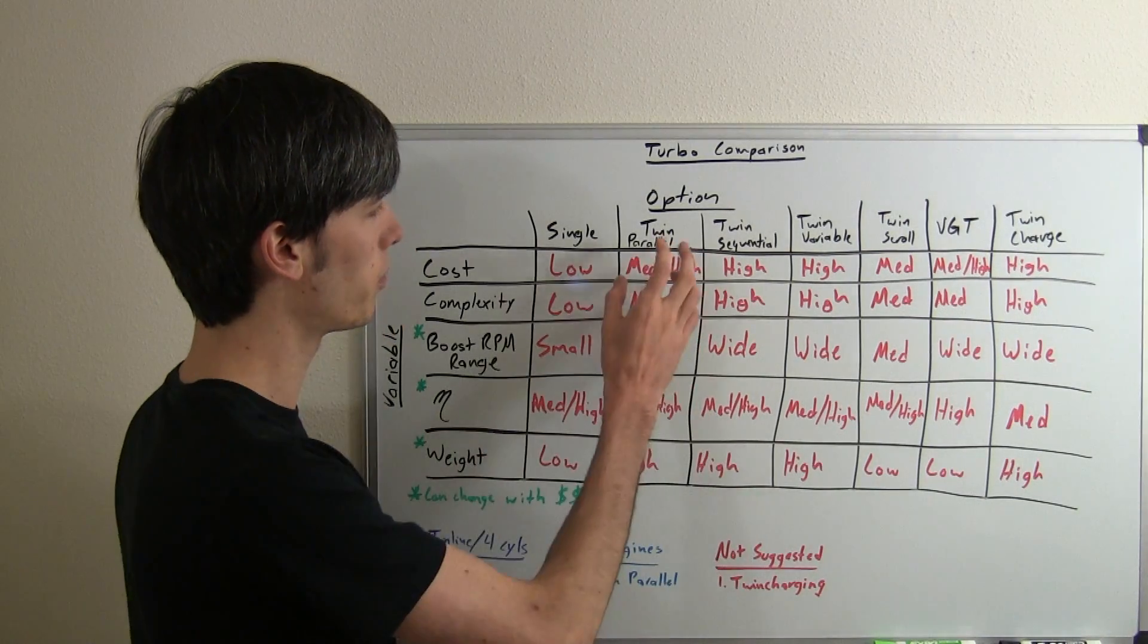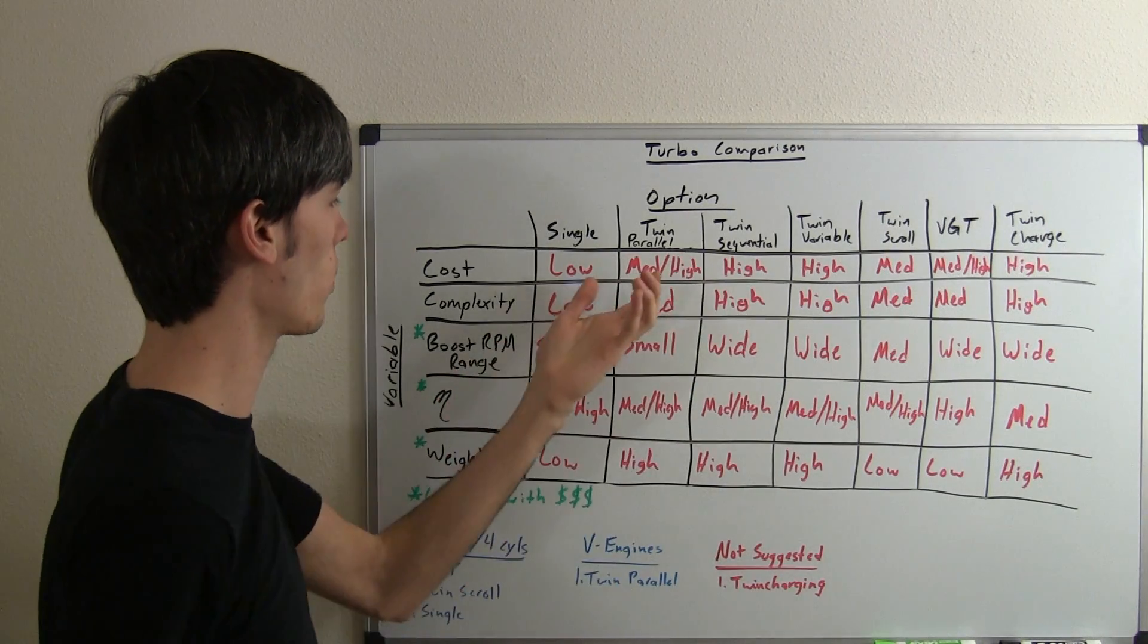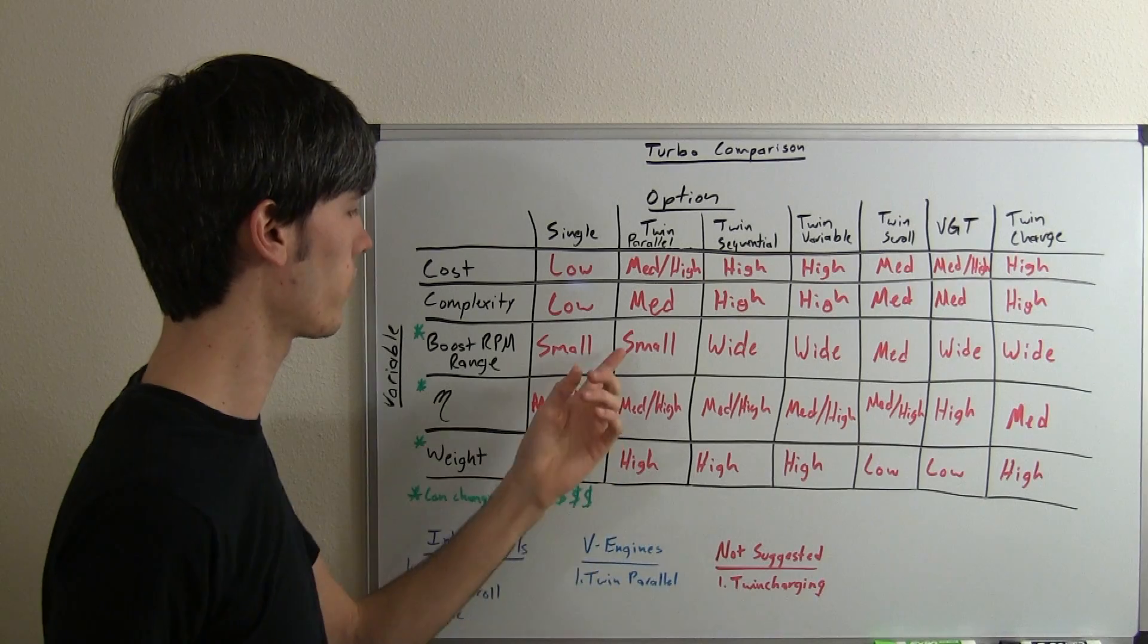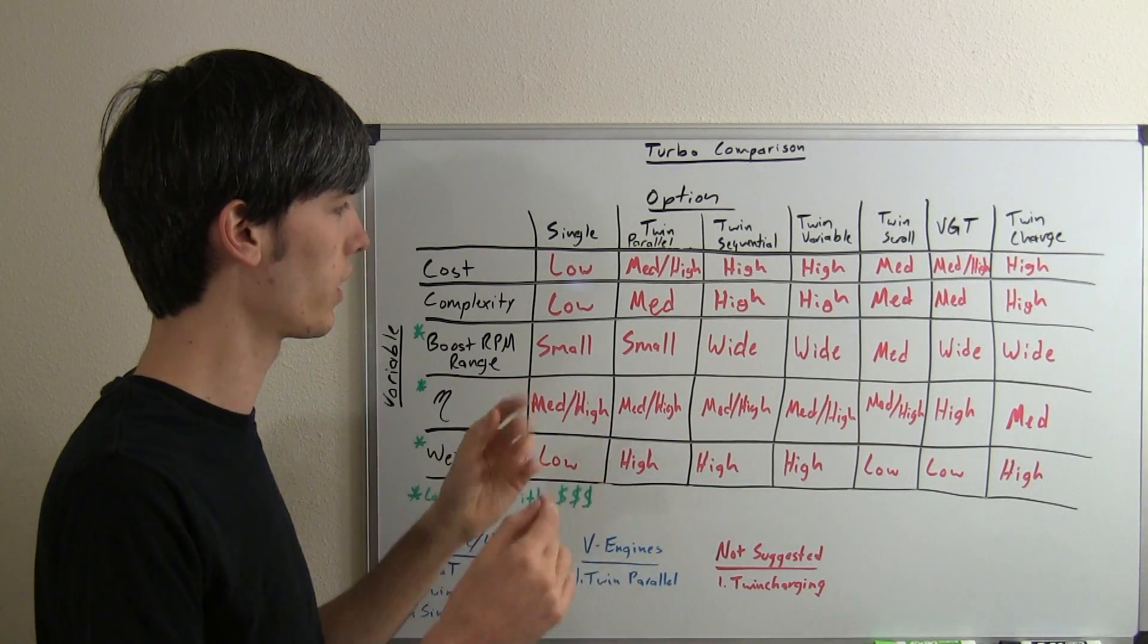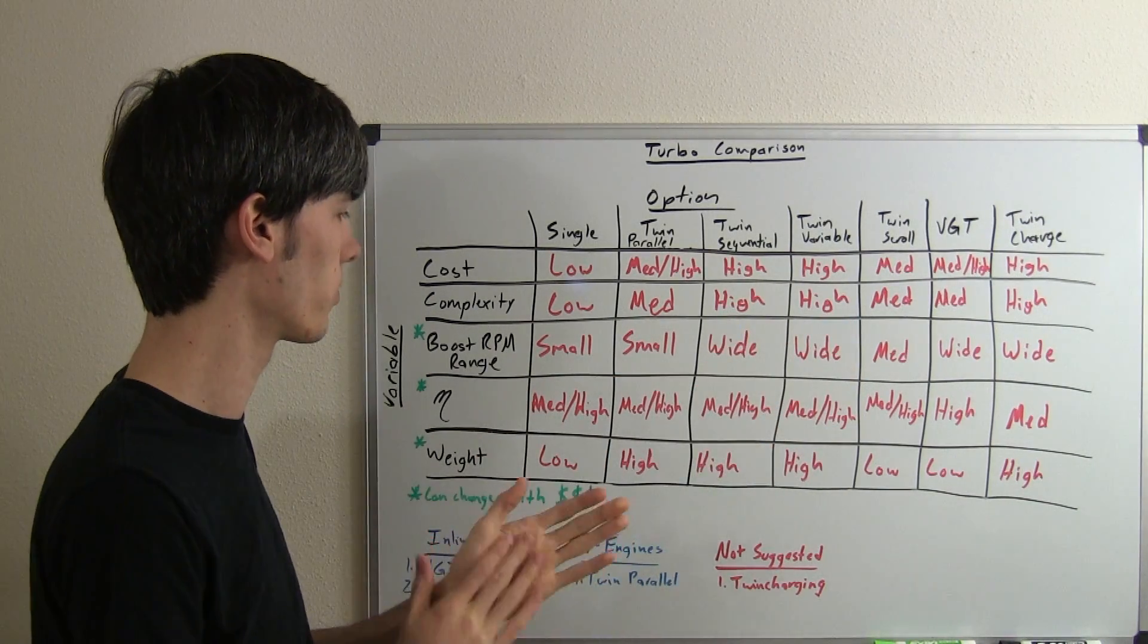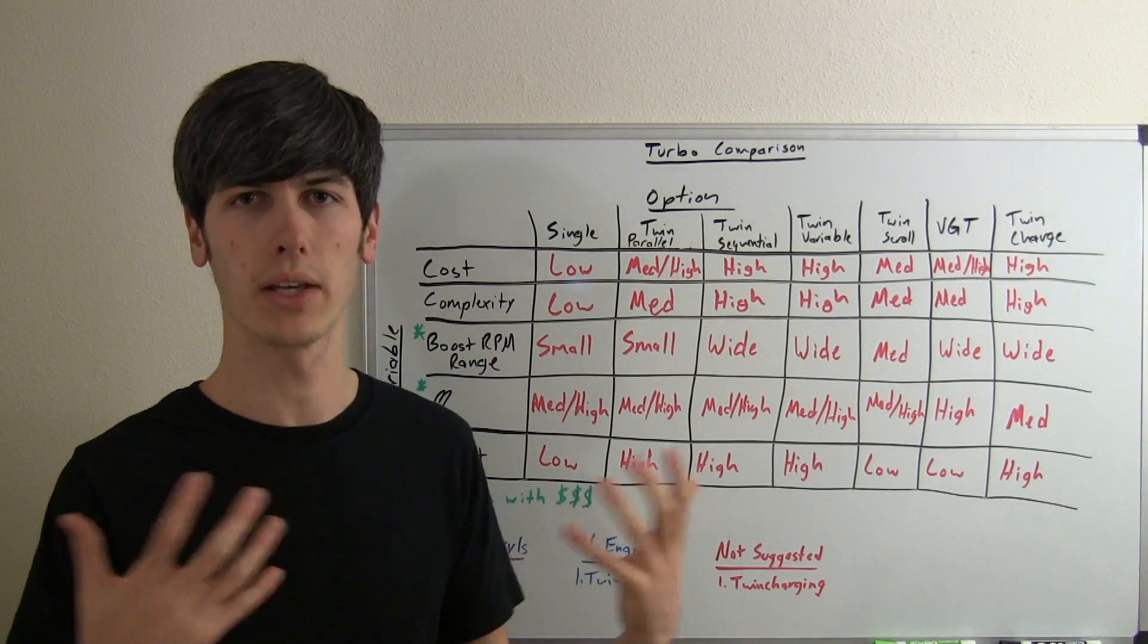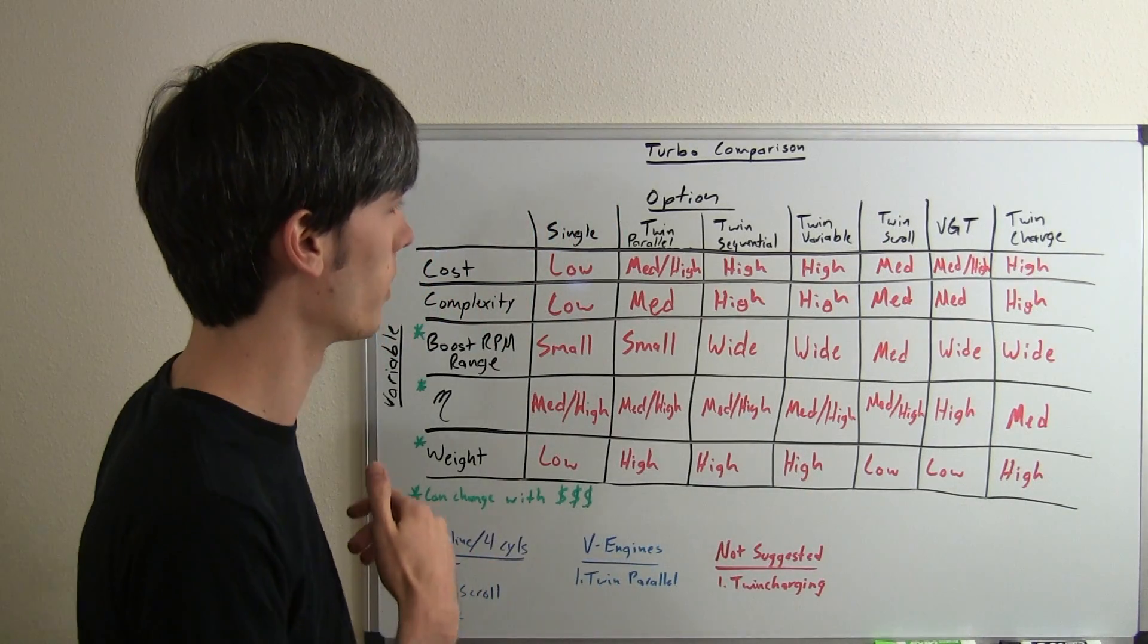So twin parallel, this is basically just like two singles. So cost is going to go up, of course, complexity is going to go up a little bit. Still, you're going to have that same boost range because basically you've just got two cylinder banks, each feeding themselves with a single turbo. So a smaller range compared to some of the other options. Efficiency: medium-high, just like the single. And the weight of course is going to go up because you're adding another turbocharger, more piping to this system.